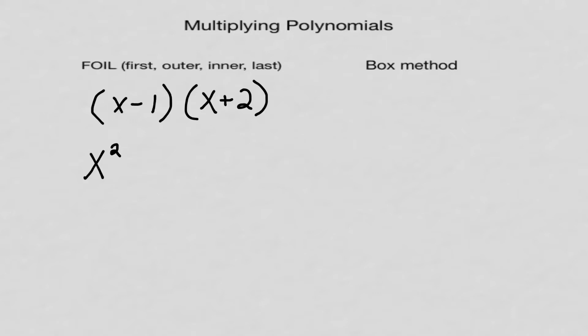Now I'm going to do the Outer. The outer is this x and this 2 — you can see they're the outer objects inside the parentheses. So 2 times x: positive 2 times positive x is going to be plus 2x.